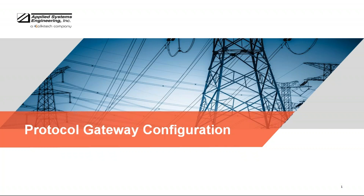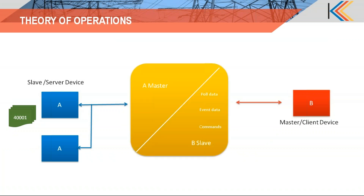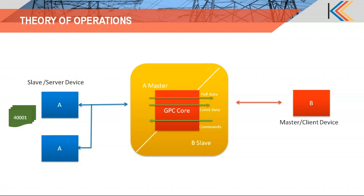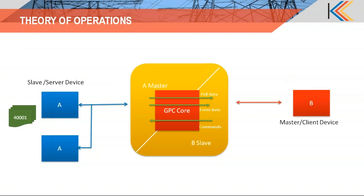First, let me show you how the protocol gateway operates. There is a slave device and a master device, both on different protocols. Let's say the slave device is on Modbus and the master device is on DNP. What we need is a gateway in between so that the slave device can actually talk to the master device.